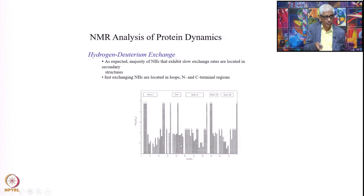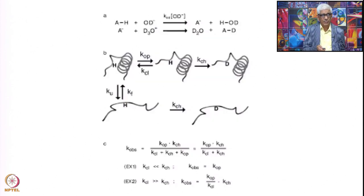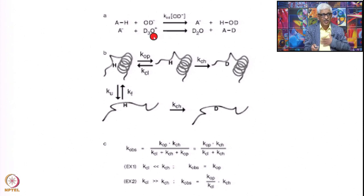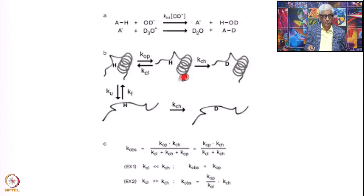Even in the different folded areas, there is a variation in exchange rates. That will tell you how the protein can sequentially unfold and the stability of the protein. You can measure the equilibrium constants for the unfolding reactions. Here, A is the amide proton, and this exchange can be catalyzed by water — D2O — with OD minus giving A minus plus HOD, and A minus plus D3O+ giving D2O plus AD. This is how the exchange process happens.